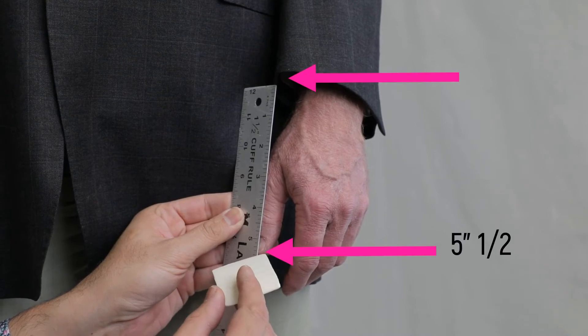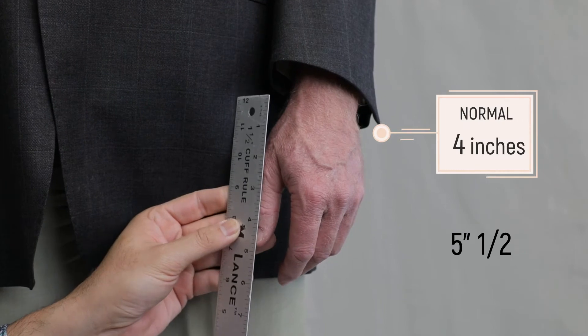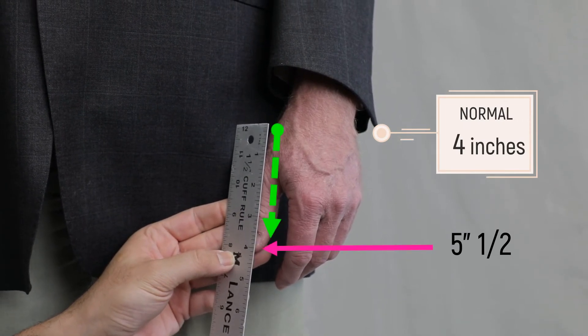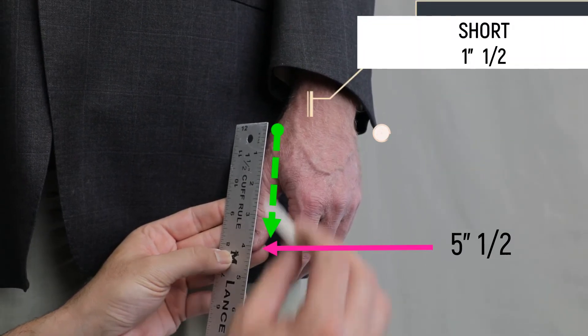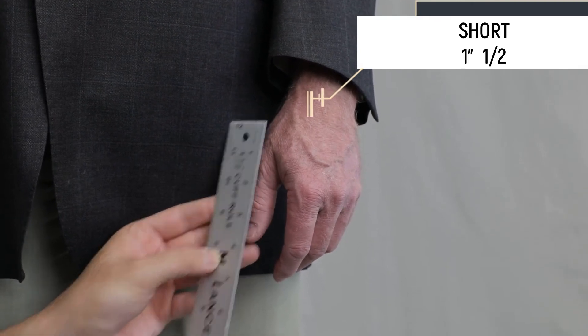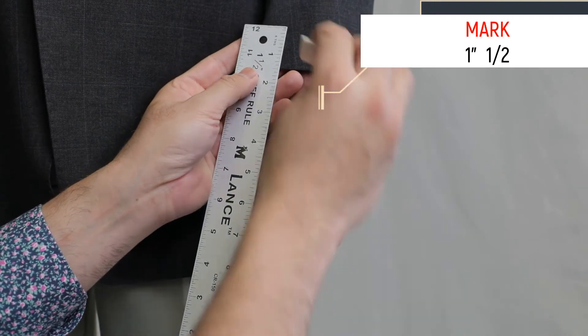This measures five and a half inches from the thumb up, and four inches is what's normal, so we would drop it to four. You calculate the difference: five and a half to four is one and a half inches short. So this sleeve is one and a half inches short, and we would mark it one and a half inches up here.